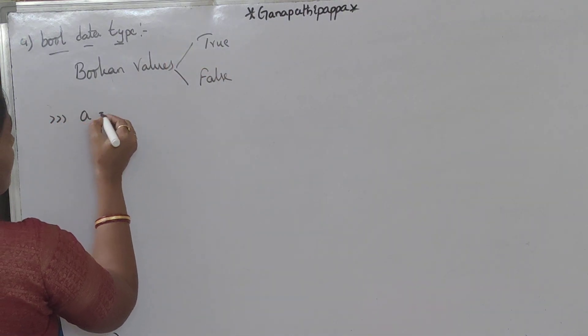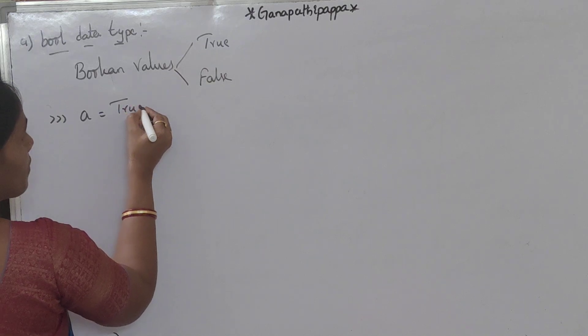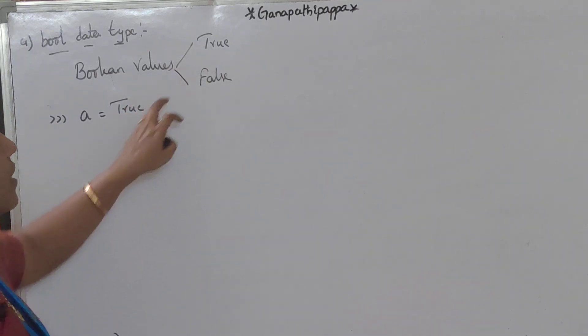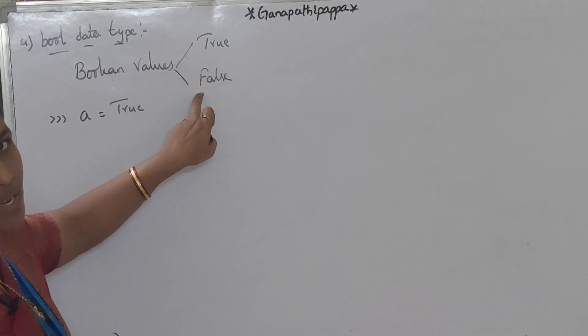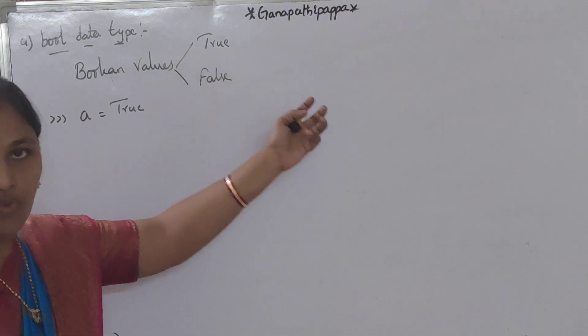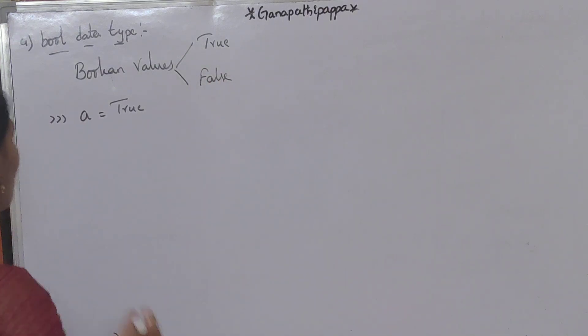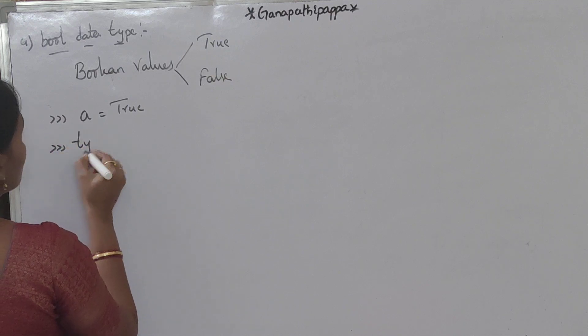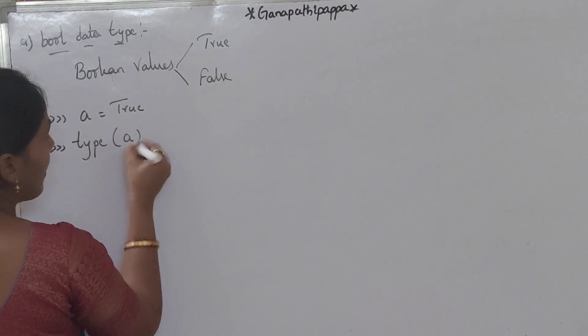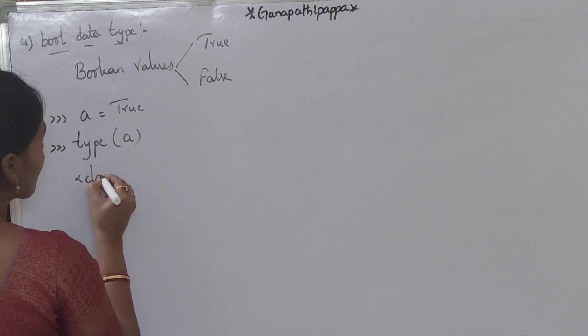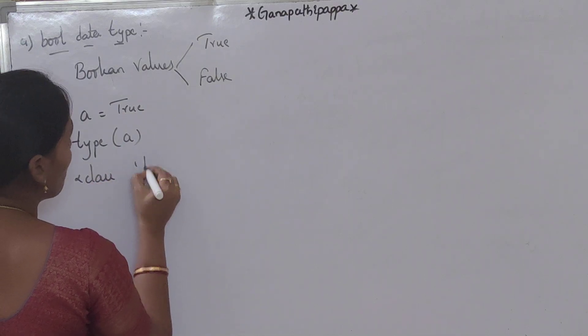Let's suppose one example: A is equal to true. Compulsory we should take capital T and capital F. Otherwise, we will get name error. Type of A, we will get class bool.